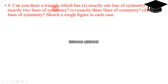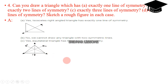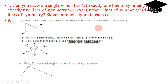Question number four: can you draw a triangle which has exactly one, two, or three lines of symmetry? For question A, an isosceles right-angle triangle has exactly one line of symmetry. For two lines of symmetry, we cannot draw a diagram. For question C, an equilateral triangle has three lines of symmetry: line L, line M, and line N. For D, a scalene triangle has no lines of symmetry.